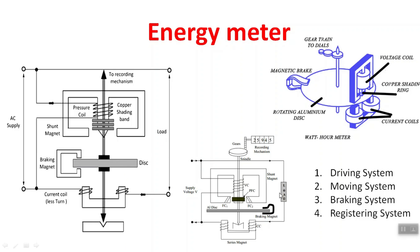Coming to the registering system: the aluminum disc is at the center of the spindle. The spindle is connected to the recording mechanism. The spindle is connected to a gear system, and the next gear connector is a cyclometer. The gears are connected one by one, and the total energy value is recorded. This is the complete operation of the energy meter.